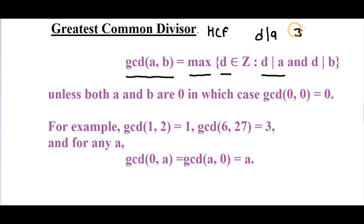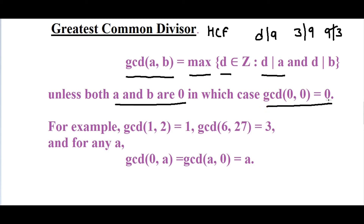Note how to read divisibility notation: if you have 3 and 9, then 3 divides 9 — not the other way around. In mathematical notation, d|a means d divides a, and d|b means d divides b. If d is the maximum integer dividing both a and b, it is the GCD. One special case: if both a and b are zero, then gcd(0, 0) is defined as 0 by convention — similar to how 0! = 1 is a convention.